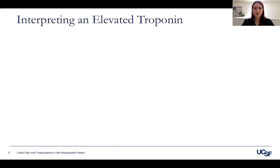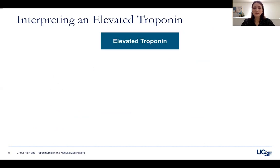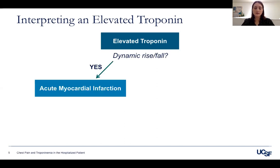Next, we'll talk about how to interpret an elevated troponin. A troponin is a cardiac enzyme released during any myocardial injury or infarction, and it starts to rise about two or three hours after an infarction event. I'll be referencing the fourth universal definitions of myocardial infarction from the ACC/AHA released in 2018. The first step once you get an elevated troponin is to trend it — you're looking for any dynamic rise or fall. Every time you order a troponin, you should also be getting an EKG to look for ischemic changes.